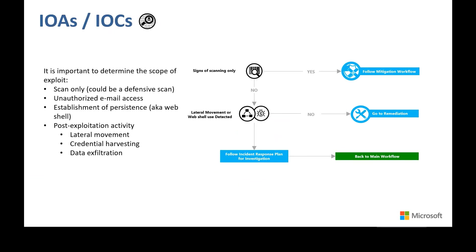When looking at IOAs or IOCs, you will likely see signs of scanning attributed to your internal team scanning if your organization is vulnerable, external security vendors scanning the internet, or malicious attackers trying to determine if your organization can be compromised easily using the SSRF vulnerability. If your organization sees signs of scanning, ensure that mitigations have either been completed or are planned. You will then want to look for further details such as whether a web shell has been dropped on the Exchange system and whether web shells are being actively used to exfiltrate data or access internal systems. This is where you determine if you need to go to the remediation phase or a full incident response investigation.